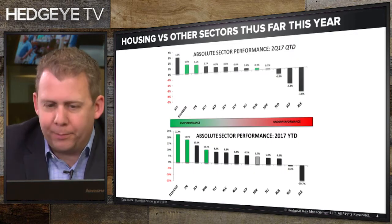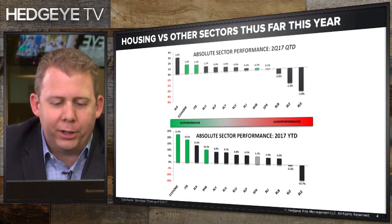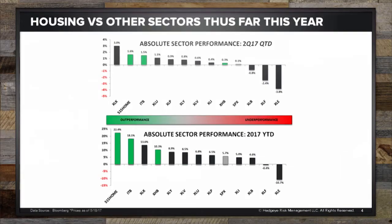Looking at price performance on slide three, the big picture is that year-to-date housing has been among — if not the best — performing category across the market. We've got the S&P 500 housing index, the S15 home series, as well as the ITB and XHB housing-related ETFs — up about 10 to 20% year-to-date, depending on the index. Performance in the second quarter has been less robust but still generally tracking toward the top of sector categories.